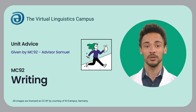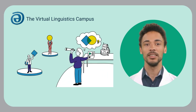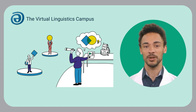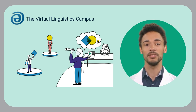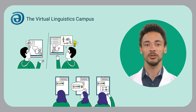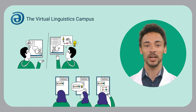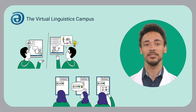Welcome back, I'm Samuel, your MC92 support. Let me introduce the final section of the MC92 course, which describes how the process of academic writing is being influenced by AI tools. It shows how AI tools can be used responsibly as a tool for brainstorming, unburdening, structuring, and optimizing texts.